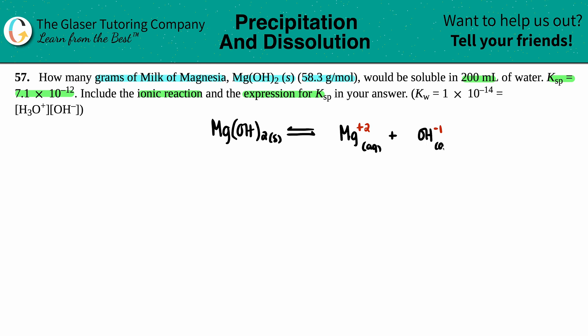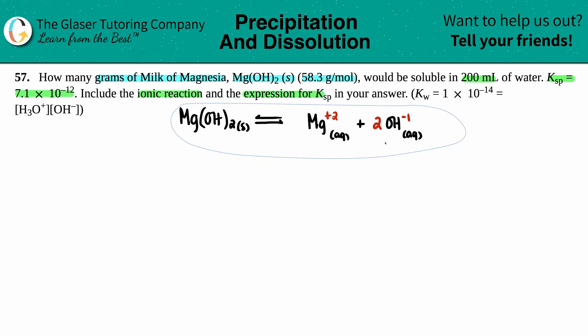I see that I have two hydroxides, so I need to put a two in front here and now I'm good to go. Reading the question again, I don't see that we have any common ions, which means I don't have any other compounds that share the Mg²⁺ or the OH⁻. They didn't give us a pH or pOH value, so we're fine.